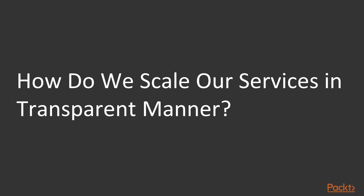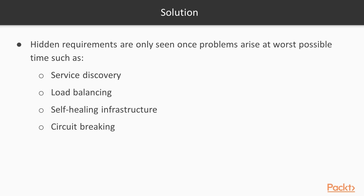These questions can be answered, but usually they get an answer too late in the game. The hidden requirements are only seen once the problems arise at the worst possible time — that is, service discovery, load balancing, self-healing infrastructure, and circuit breaking.